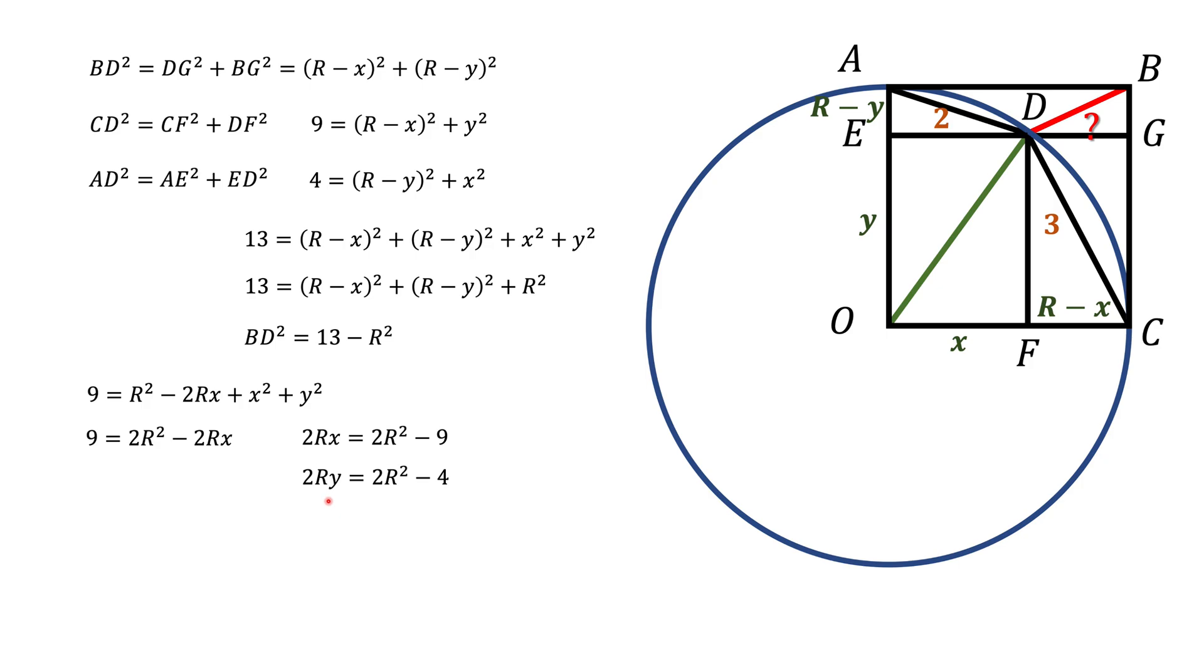Now, remember that X squared plus Y squared is R squared. We can get rid of X and Y here by squaring each of these expressions and adding them together. That's what we're going to get. Now we know X squared plus Y squared is R squared. We're going to plug it in, open the parenthesis, and get equation like this.